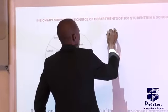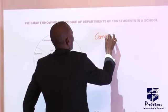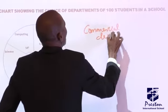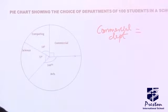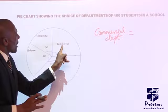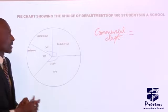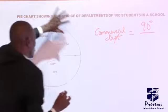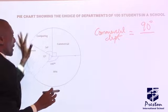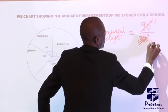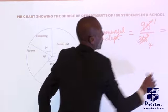Commercial departments. How do I get? For your question, what fraction of the students? Fraction means what is the angle of commercial? 90 degrees over, what is the total angle, the sum of angles of a circle, 360 degrees. 90 over 1, 90 over 4, the fraction is 1 over 4. This is a method of using angles.